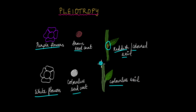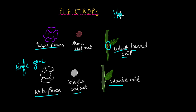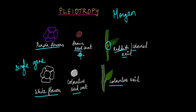He attributed this observation to the fact that these traits were all controlled by a single gene. Keep in mind that this was before Morgan performed his experiments on fruit flies, so Mendel didn't know about linkage or recombination. He attributed his observation to the fact that these were all traits controlled by a single gene — and he was not wrong.